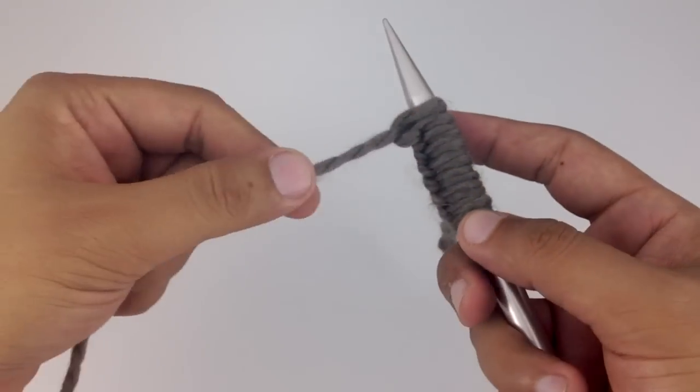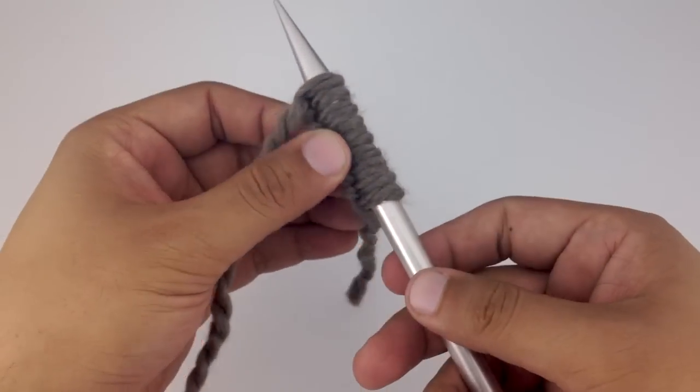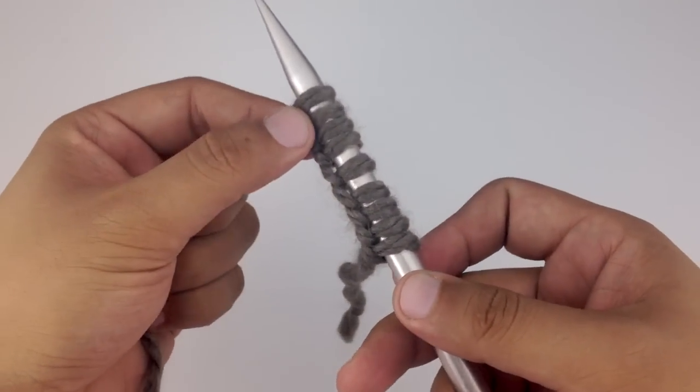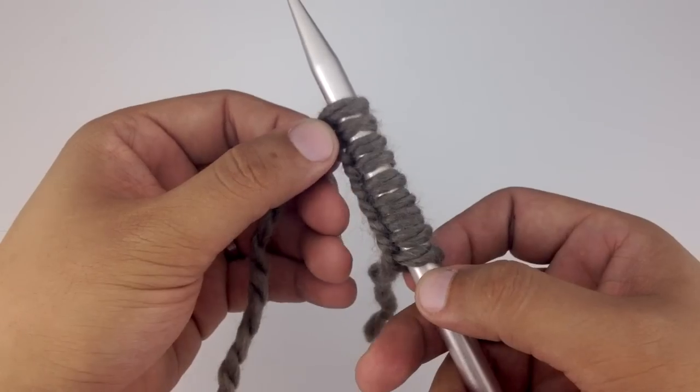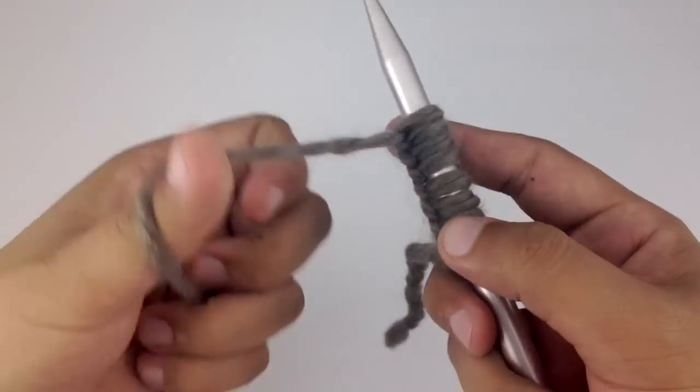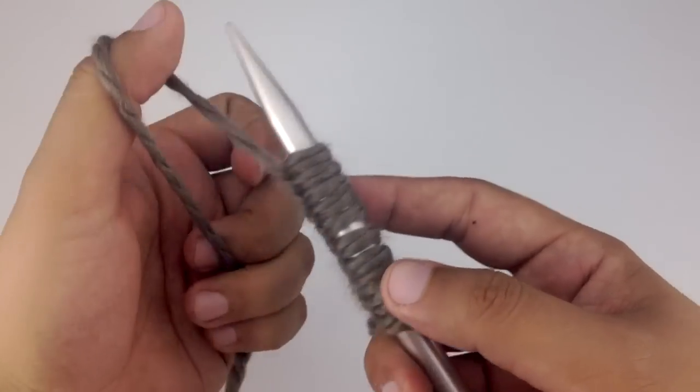We're going to continue repeating these four steps from three through six until you've cast on all the stitches needed by your pattern. For this little demonstration, we're going to do about 16 stitches. And that's how you do the backwards loop cast on.